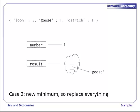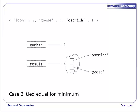The second entry has a new minimum count, so we replace both the value of number and our set. This is case number two from above. Finally, the third bird's count is the same as the current minimum, so we just add it to the set.